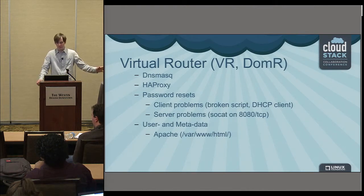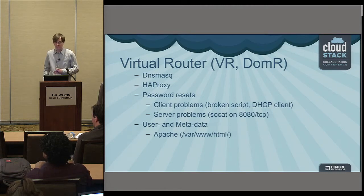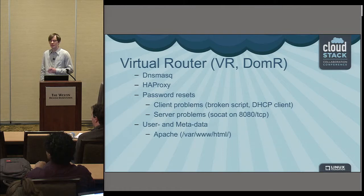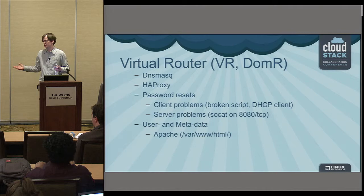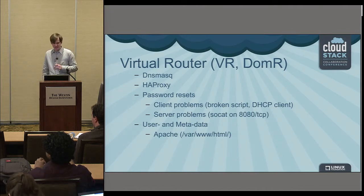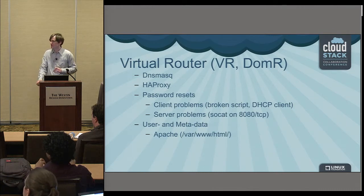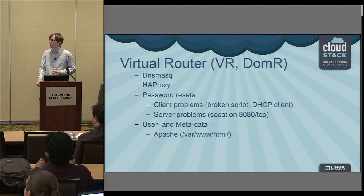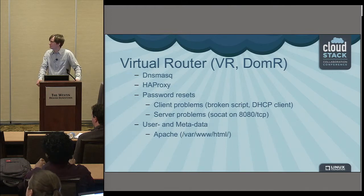The virtual router, depending on the type of network and network offering, does different things. Generally it provides DHCP and DNS for the VMs in the network, done through dnsmasq. So if you're having DHCP or DNS issues and have ruled out VLAN problems, you can log in to the virtual router and check if dnsmasq is running.